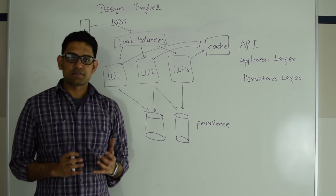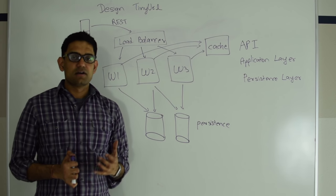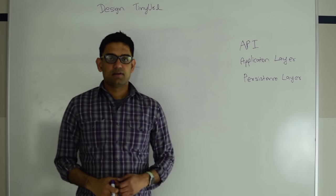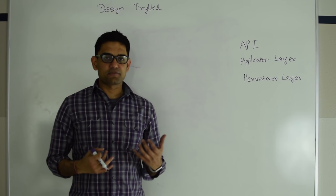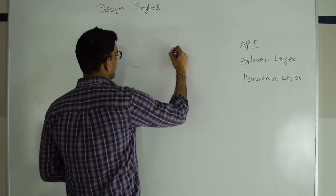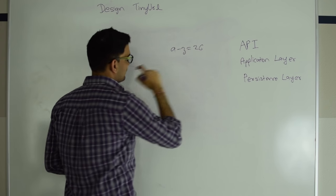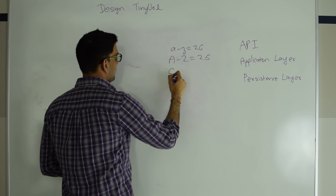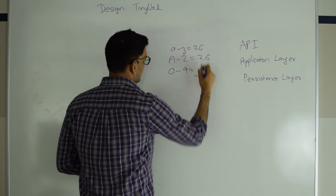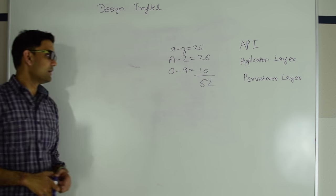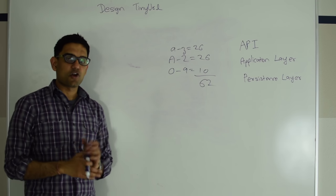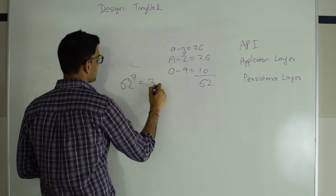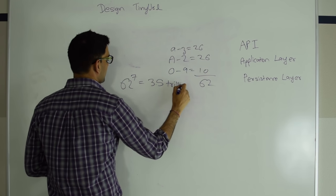So next let's come to the gist of this problem: how do you generate a tiny URL which is as unique as possible? Let's see how many characters we need. First, what characters can we have? We can have a–z which is 26 characters, uppercase A–Z which is another 26, and 0–9 which is 10 characters — a total of 62 characters. So if our tiny URL is 7 characters long, we can have 62 raised to 7 combinations, which is approximately 3.5 trillion combinations.